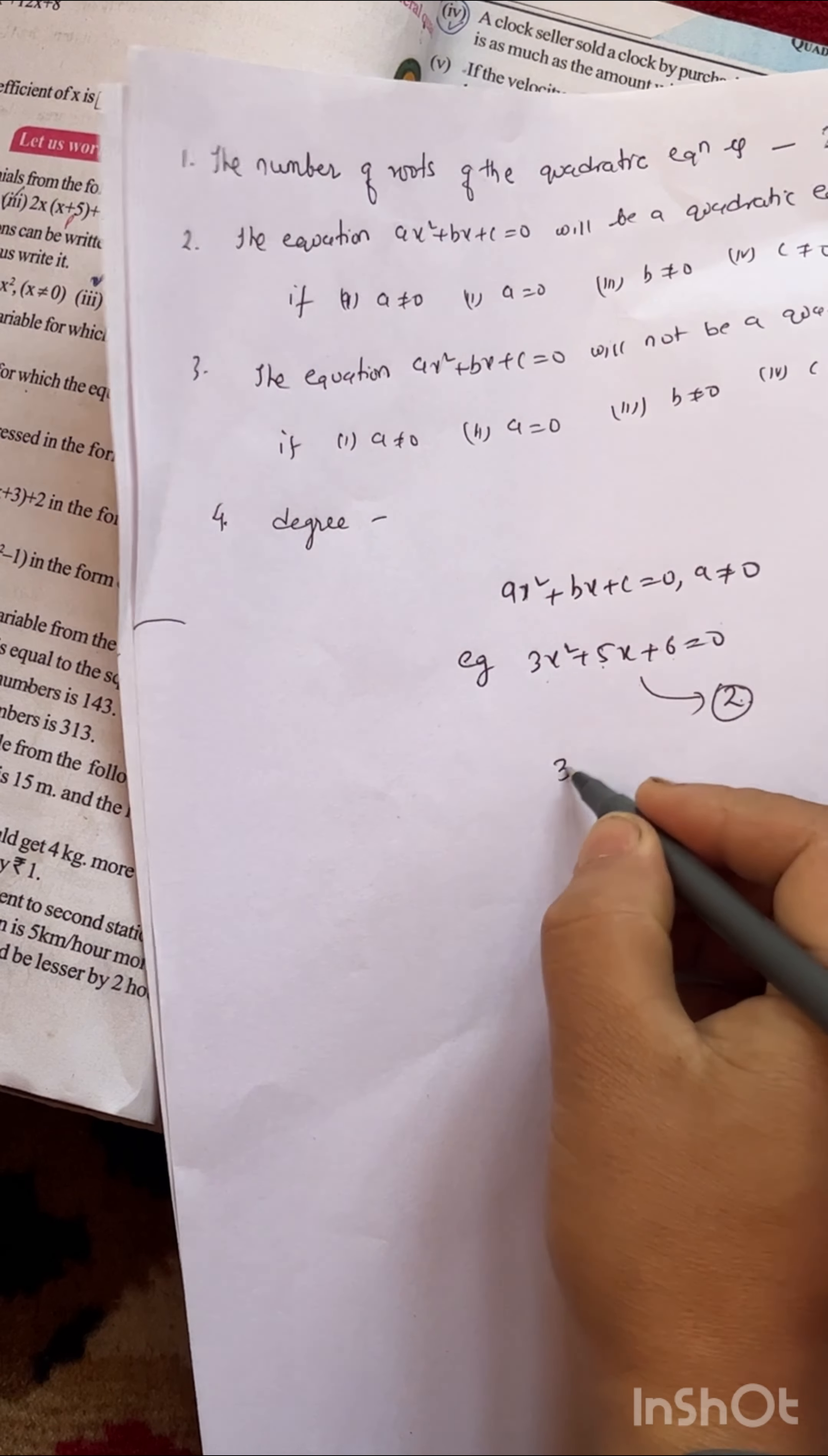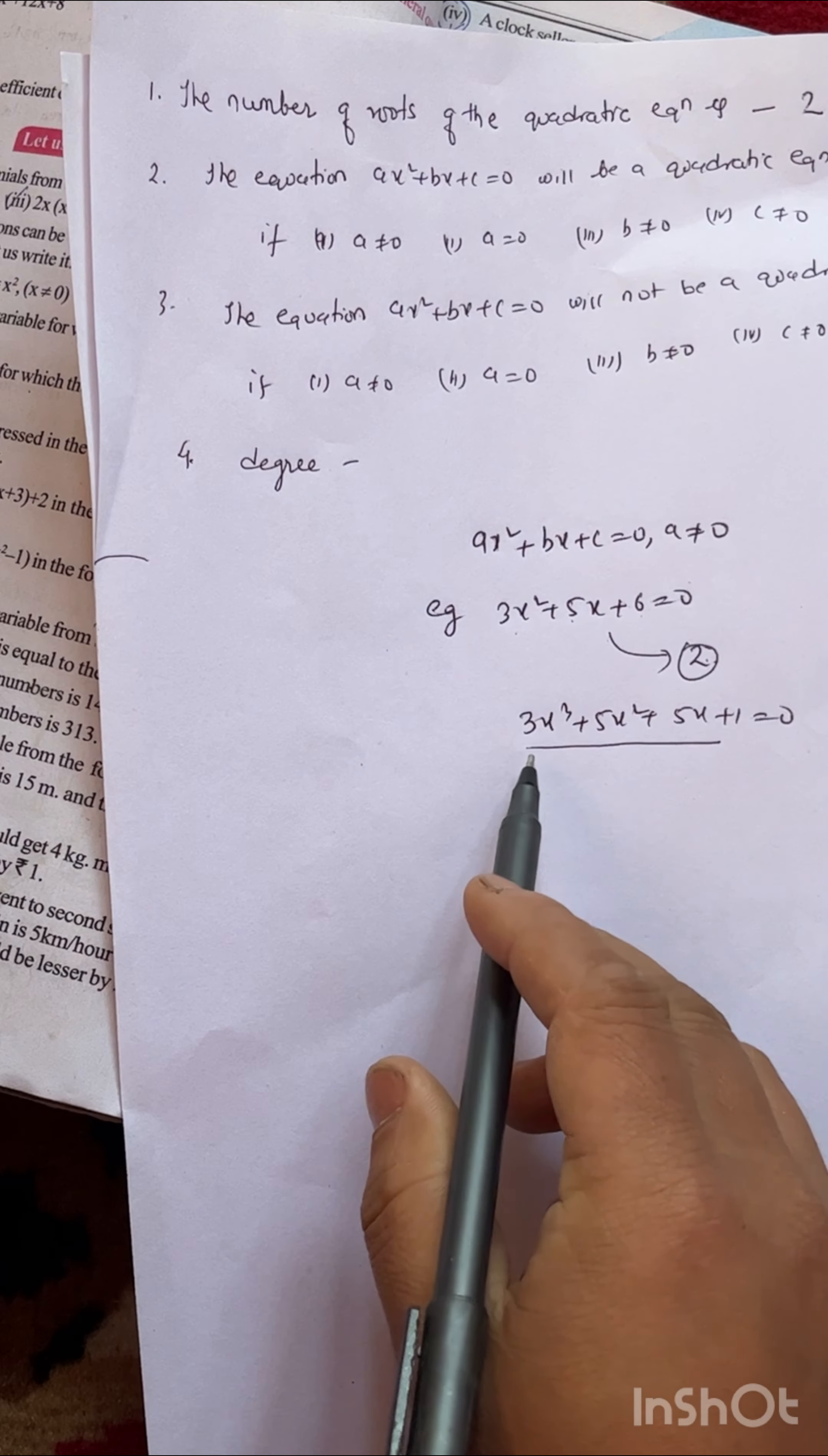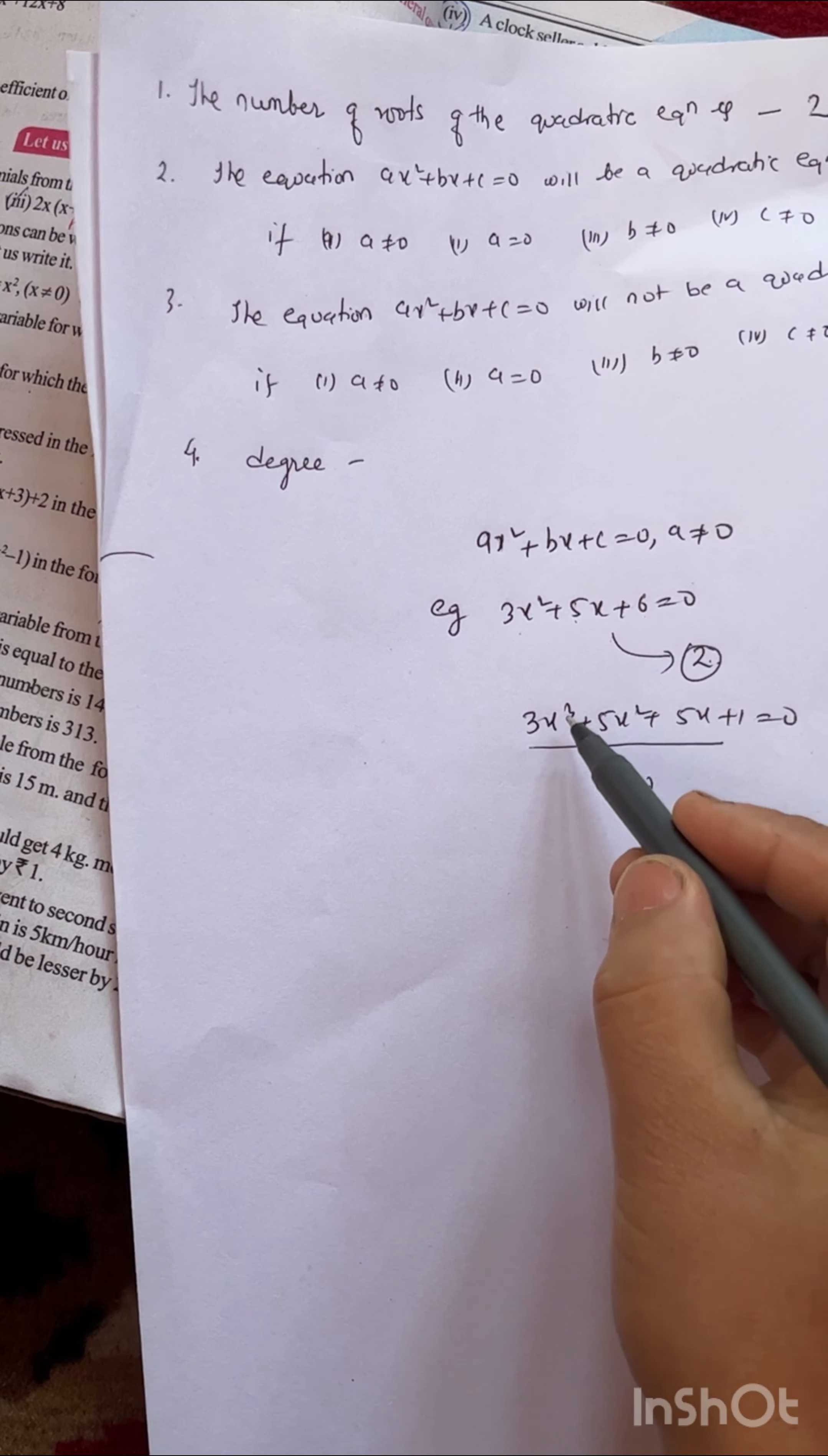For example, 3x³ + 5x² + 5x + 1 = 0. This is not a quadratic equation. A quadratic equation has highest power 2. This equation has 3 roots.